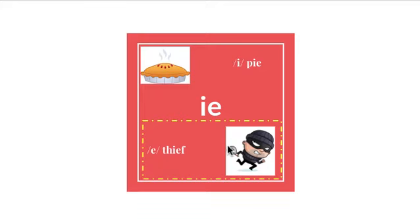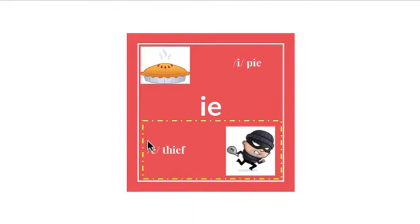The word is lies — I like pi. Yield — E like thief. Chief — E like thief. Brief — E like thief. Pie — I like pi. Died — I like pi. Fiend — E like thief. Yield — E like thief.